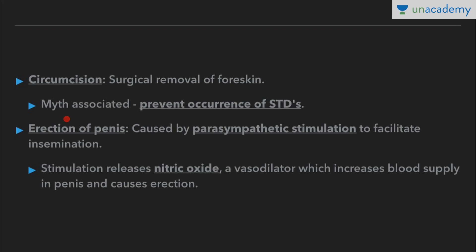Erection of the penis is caused by parasympathetic stimulation to facilitate insemination — note it is parasympathetic, not sympathetic stimulation. This parasympathetic stimulation releases nitric oxide, which is a very powerful vasodilator that increases blood supply and causes the erection to facilitate insemination.